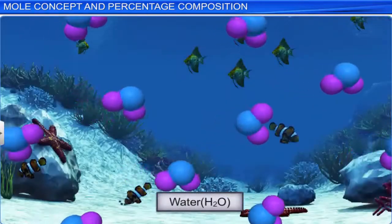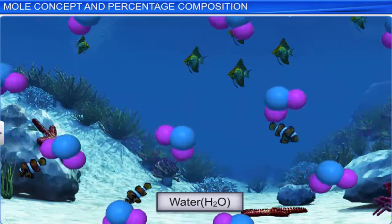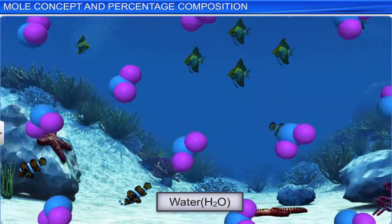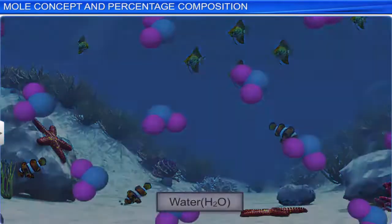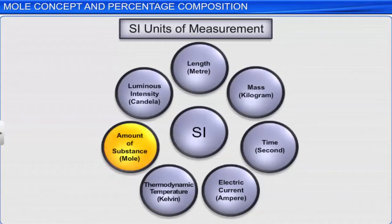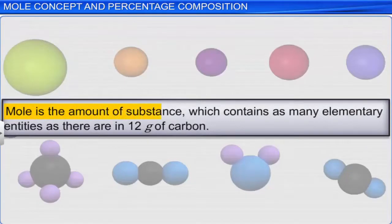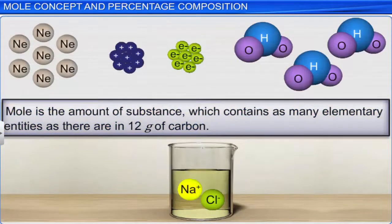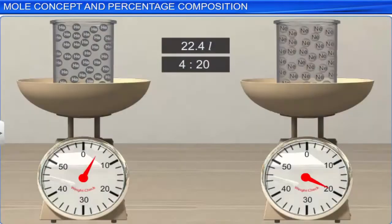When scientists were working with elements and compounds, they felt the need to have a unit of measurement to count entities at the microscopic level. Thus, the SI base unit, mole, was introduced. Mole is the amount of substance which contains as many elementary entities as there are in 12 grams of carbon. Elementary entities may be atoms, molecules, ions, electrons or protons. Note that one mole of a substance always contains the same number of entities, irrespective of the identity and kind of the substance.